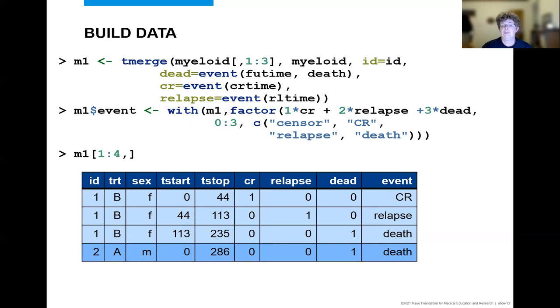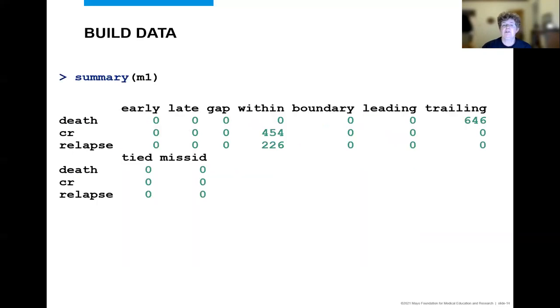Finally, RL time, relapse time, is used to further split the follow-up and create the relapse variable. The T-merge function can also be used to create time-dependent covariates using a call to TDC instead of to event. The T-merge function attaches an attribute to the data frame so that the summary of the dataset shows useful information about how the time intervals were created. And more information about interpreting this summary is available in one of the survival package vignettes.